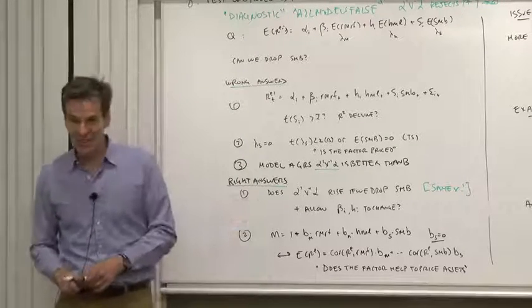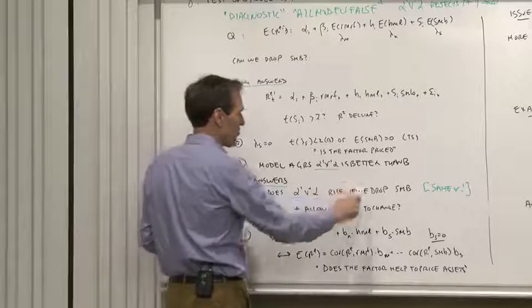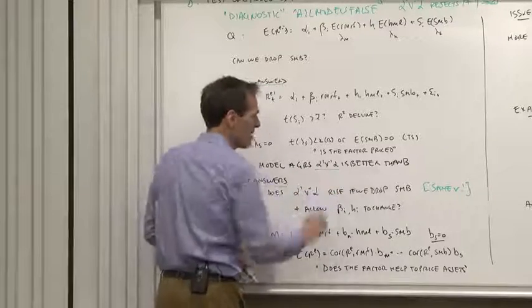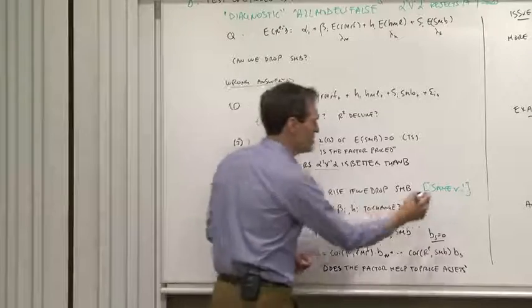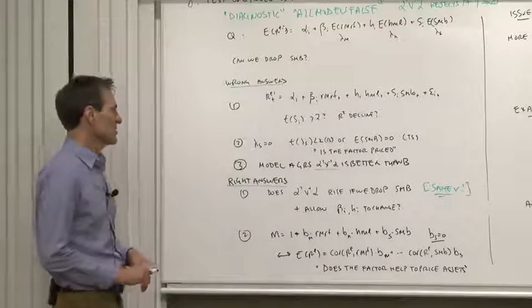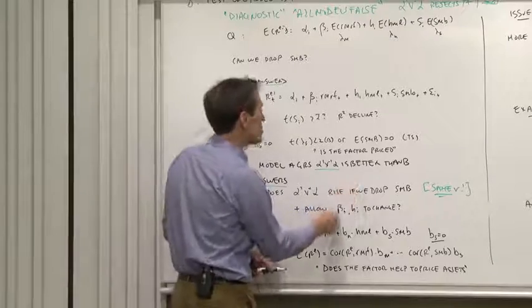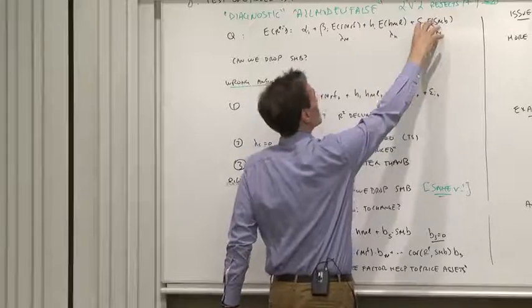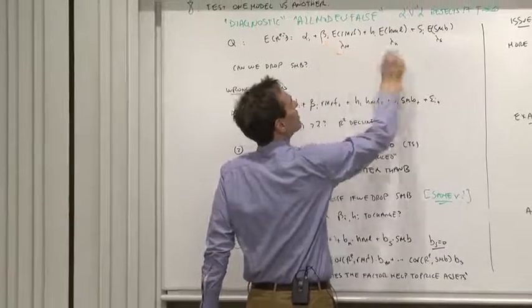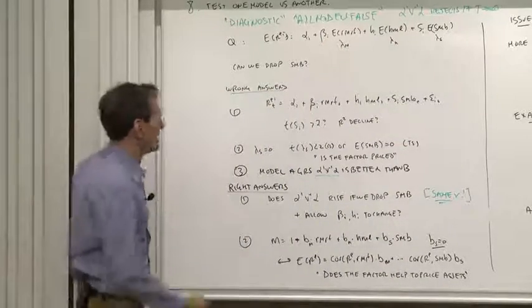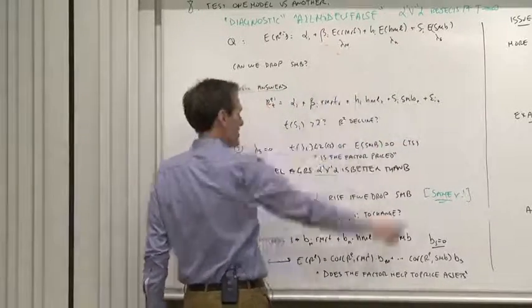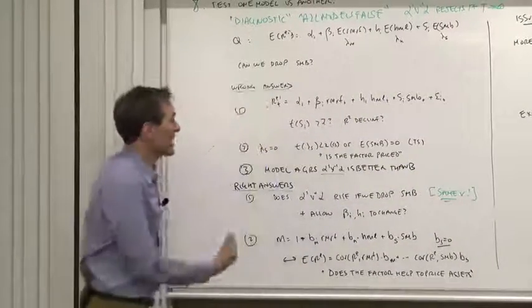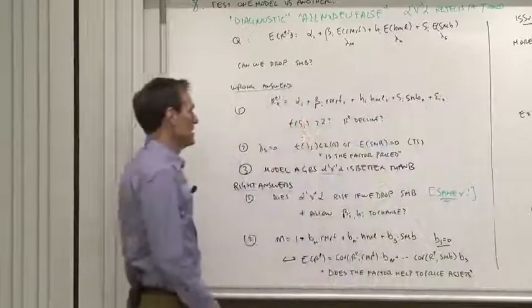How about some right answers to answering this question? You can do the proper comparison of the chi-squared test. Does the chi-squared value rise if we drop SMB? But you have to use the same V matrix across the two. And what you're doing when you drop SMB is you're allowing the beta and the H to change. And the central story here is that by dropping SMB, maybe the larger betas of small stocks would pick up the small firm premium. Well, you have to rerun this regression with different values of beta and H, not just look at the regression that we have. That's why looking at the mean of SMB alone doesn't answer the question.